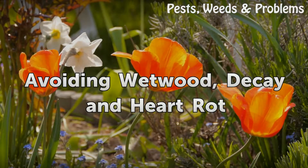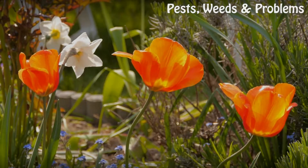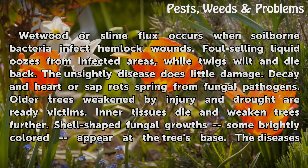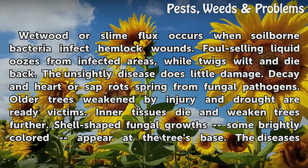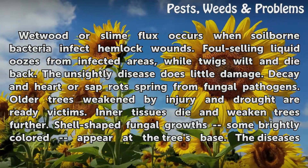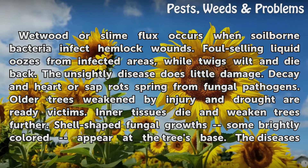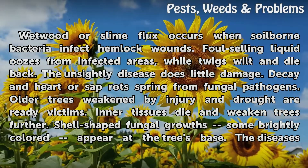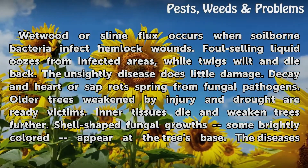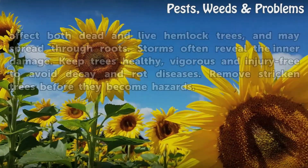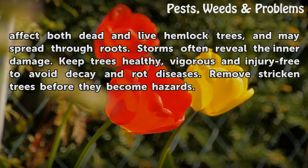Wet wood or slime flux occurs when soil-borne bacteria infect hemlock wounds. Foul-smelling liquid oozes from infected areas while twigs wilt and die back; the unsightly disease does little lasting damage. Decay, hard rot, or sap rot spring from fungal pathogens. Older trees weakened by injury and drought are ready victims — inner tissues die and weaken trees further. Shell-shaped fungal growths, some brightly colored, appear at the tree's base, and the diseases may spread through roots. Keep trees healthy, vigorous, and injury-free to avoid decay and rot diseases. Remove stricken trees before they become hazards.